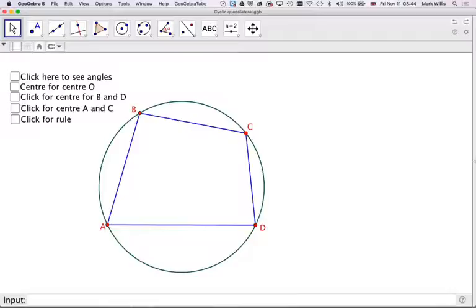So this time what we've got is a quadrilateral drawn in so that the four vertices just touch the edge of a circle and therefore the quadrilateral has a special name. It's called a cyclic quadrilateral.